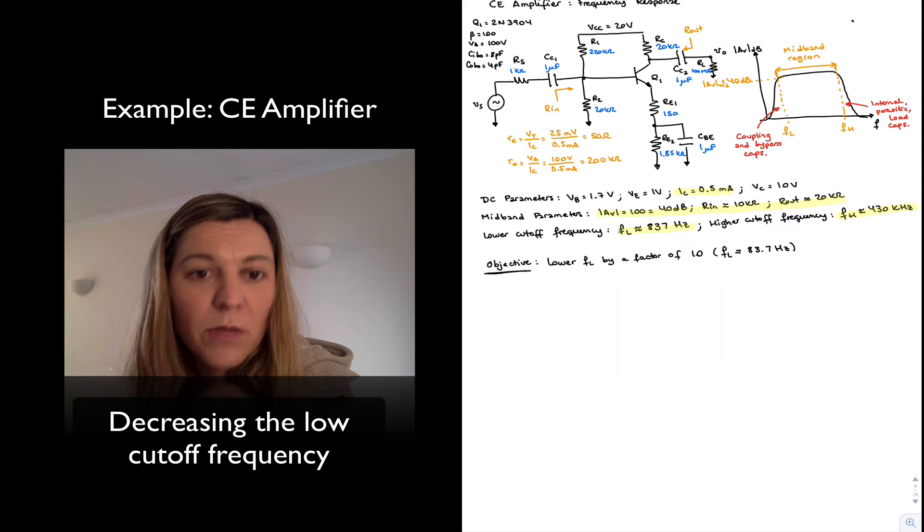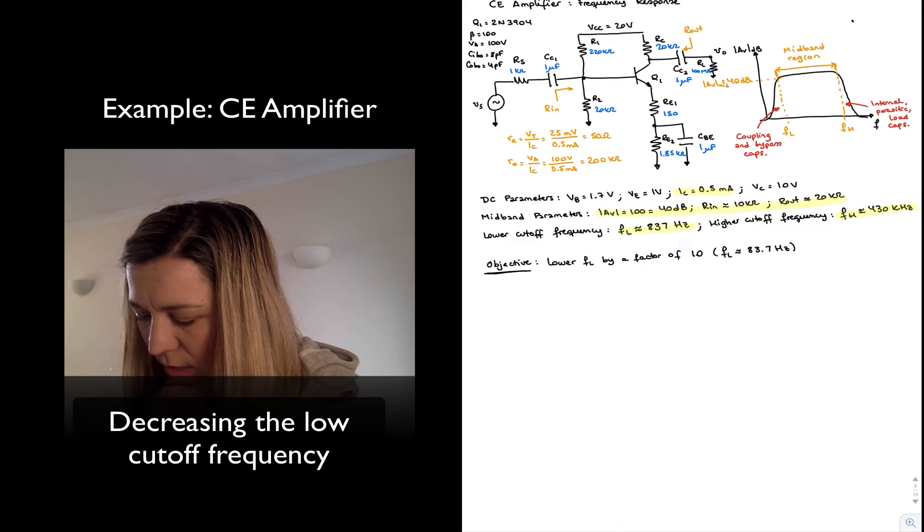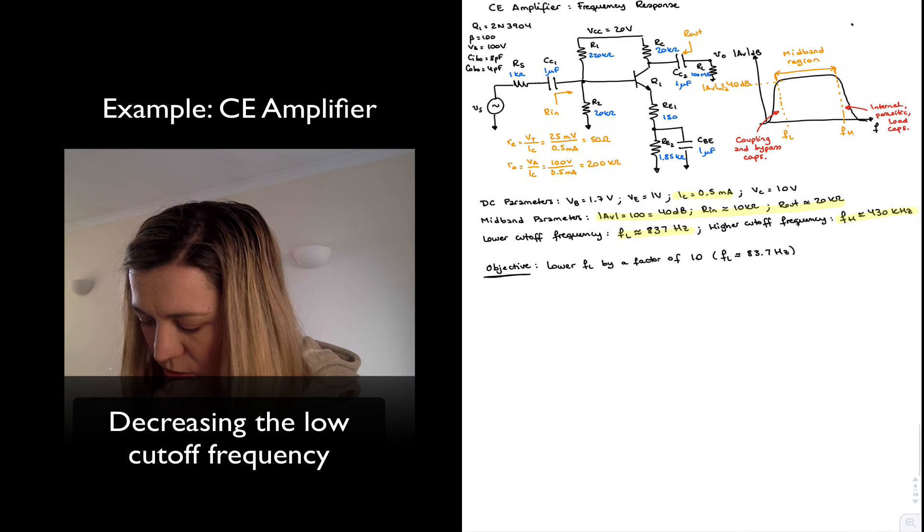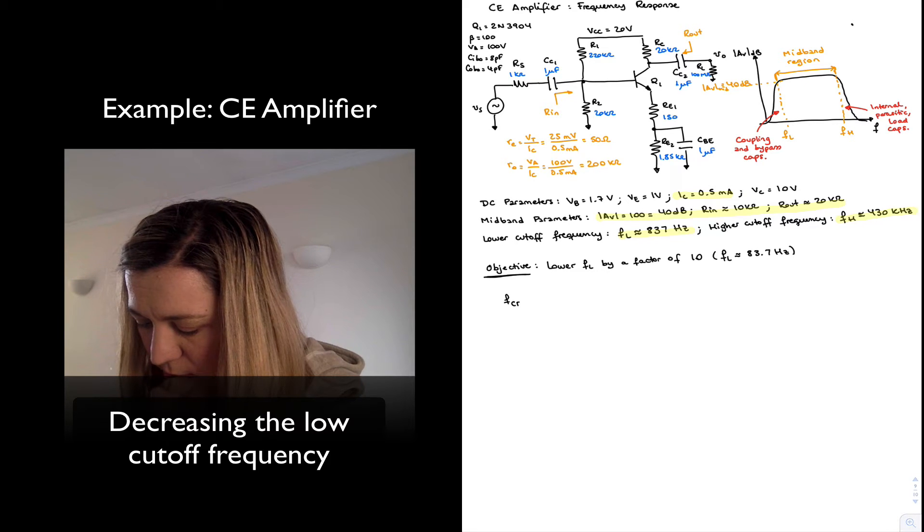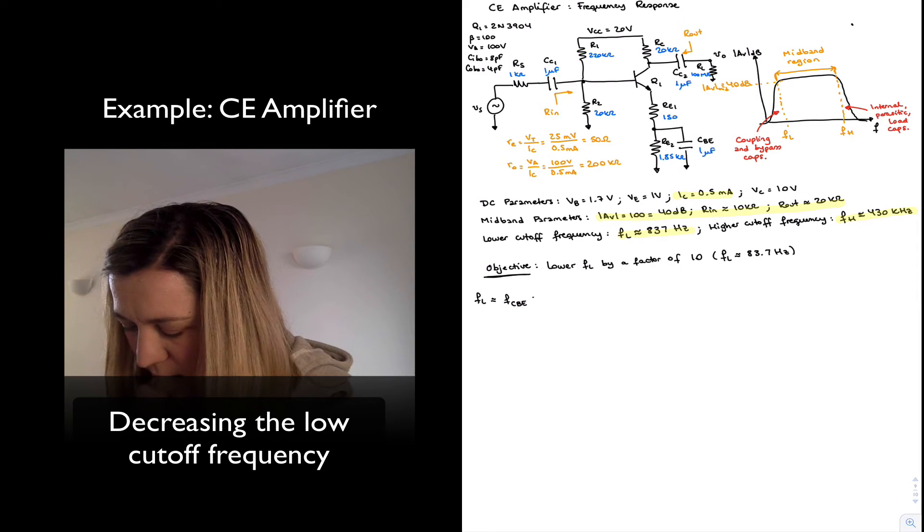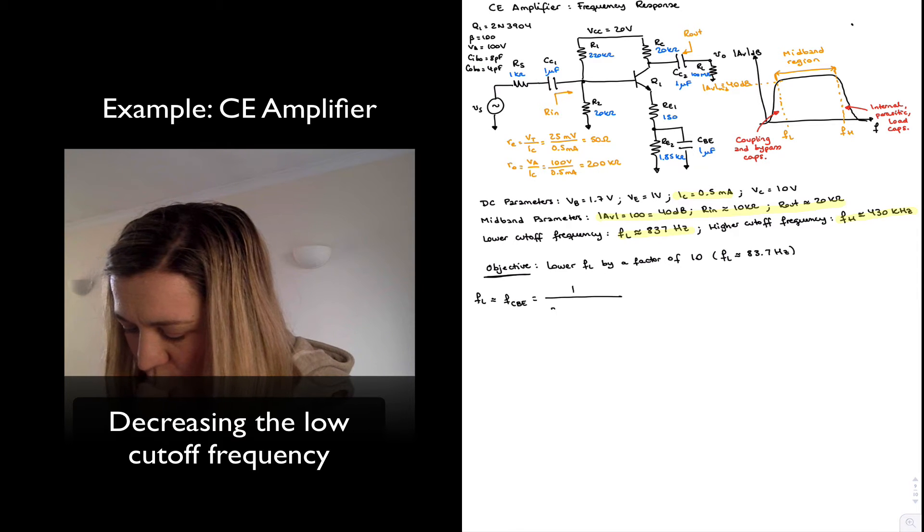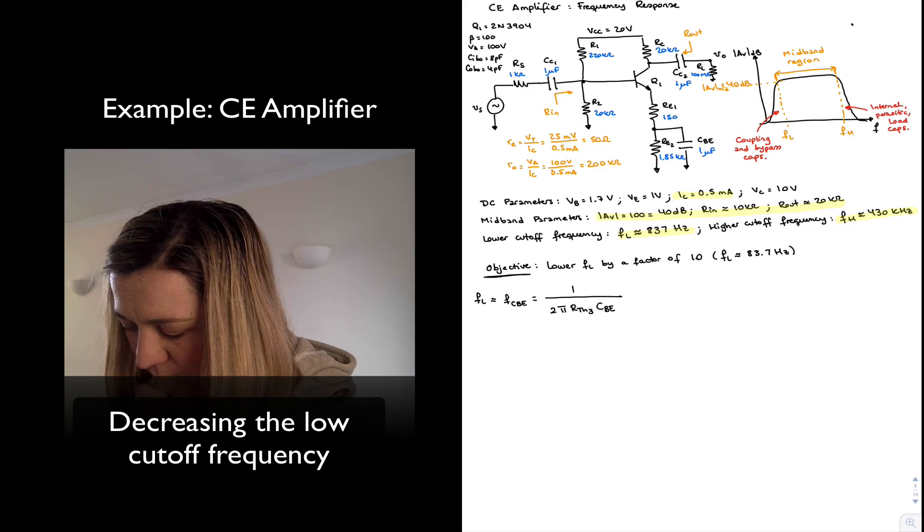And that's typically the case for a common emitter amplifier. The bypass capacitor is going to be the dominant capacitance which is going to determine the low cutoff frequency. And so our expression for FL due to CBE was approximately 1 over 2 pi R7 connected to CBE times CBE.